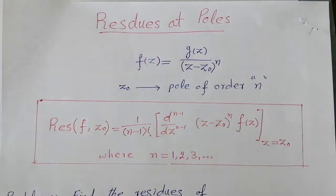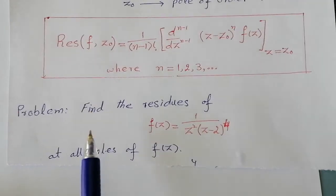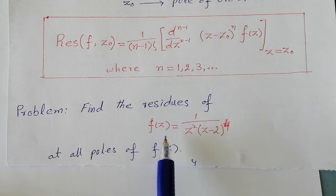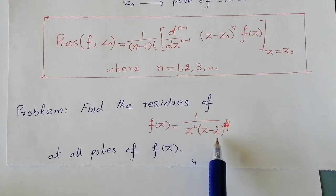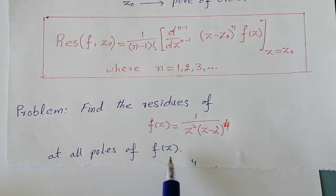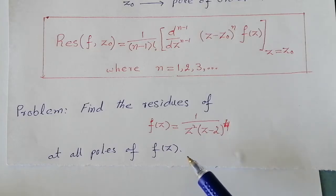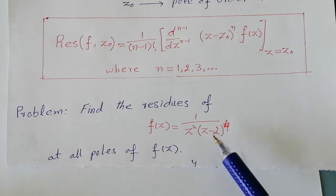Let us start from the solution of a problem. The problem is: find the residues of f(z) = 1 / [z² · (z − 2)⁴] at all poles of f(z). We will solve this problem, and you can use the procedure I apply here to solve any problem of this type.